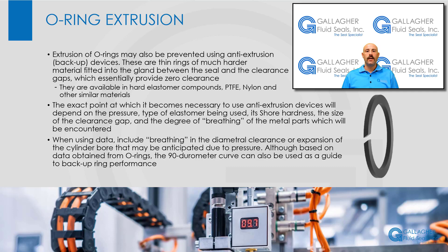Extrusion of O-rings may also be prevented by using anti-extrusion devices known as backup rings. These are thin rings of much harder material fitted into the gland between the seal and the clearance gaps, which essentially provide zero clearance. They are available in hard elastomer compounds, leather, PTFE, nylon, and other similar materials. The exact point at which it becomes necessary to use anti-extrusion devices will depend on the pressure, type of elastomer being used, its shore hardness, the size of the clearance gap, and the degree of breathing of the metal parts which will be encountered. When using the data, include in the diametrical clearance any breathing or expansion of the cylinder bore that may be anticipated due to pressure. Although based on data obtained from O-rings, the 90 durometer curve can also be used as a guide for backup ring performance.